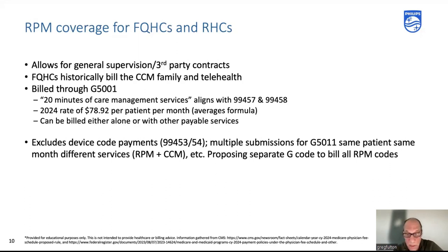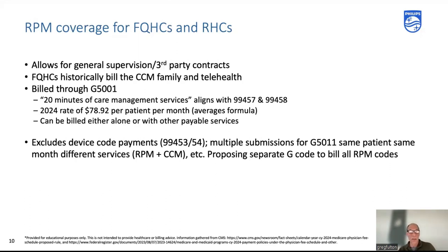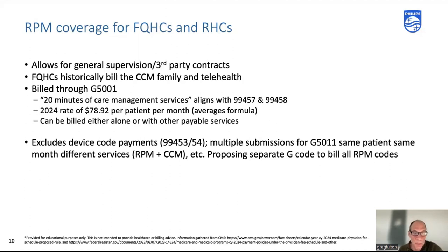So that's where we are coming into 2024 for FQHCs. Whether you have a patient in RPM only — bill G5011 at $78.92 — or in RPM and CCM together, you still bill the same code at the same rate. There is also some language in the final rule that allows multiple billings per month of G5011 for the same patient. I would recommend going to that final rule and having your coding and policy people review that language.